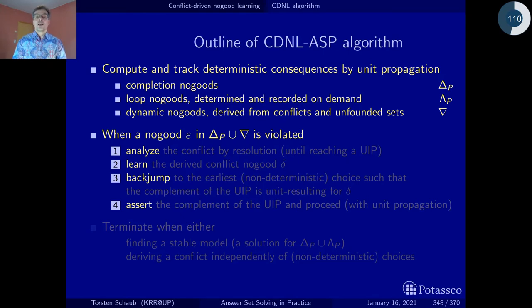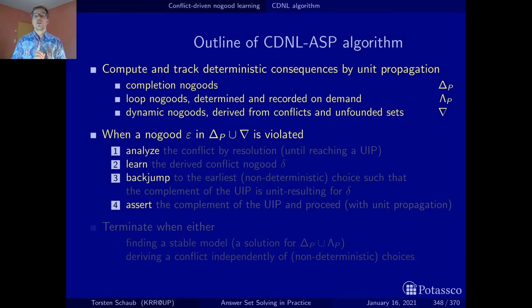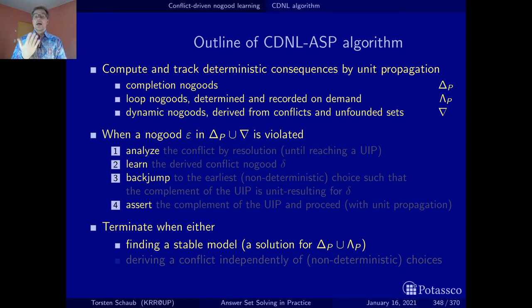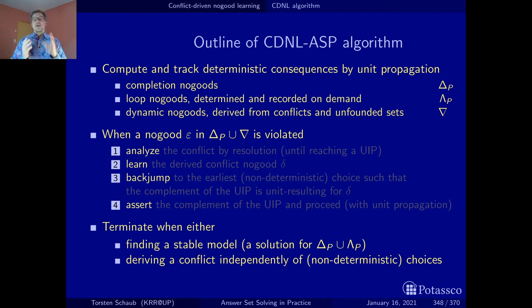Let's look at what makes us terminate the procedure. CDNL-driven search terminates with one of two outcomes. Either a stable model of the logic program is obtained — meaning we obtain a total assignment where all atoms and bodies have been assigned a truth value and no no-good, neither a completion nor a loop no-good, is contained in this assignment. The other output is that the logic program is unsatisfiable — it has no stable model — and this is indicated by obtaining a conflict no-good that appears between the empty assignment and the very first choice.